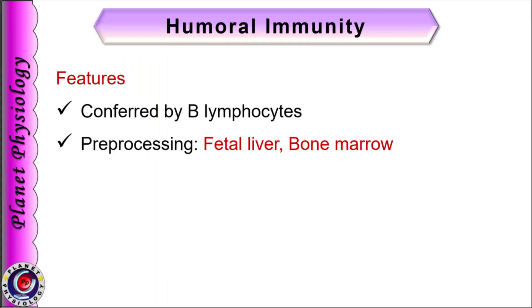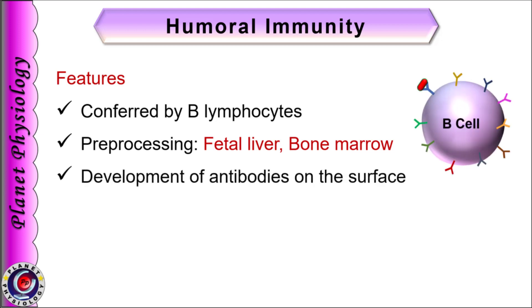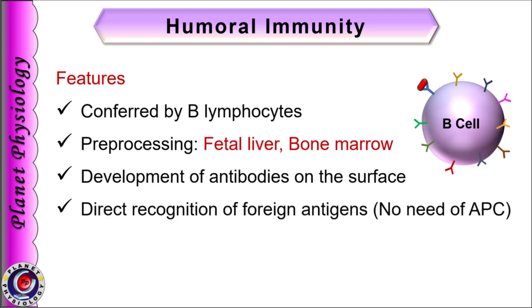As we have studied in the first part, humoral immunity is conferred by B-lymphocytes and hence it is also called as B-cell immunity. Immature B-lymphocytes are pre-processed in liver during mid-fetal life and later in bone marrow to form immunocompetent B-cells. During pre-processing, they develop about 1 lakh different types of antibodies on their surface which act as B-cell receptors to detect foreign antigens.